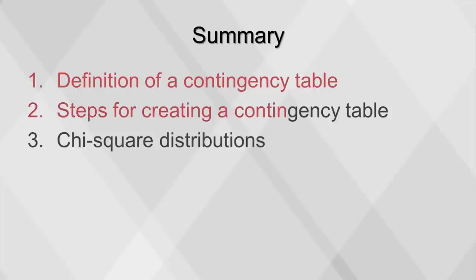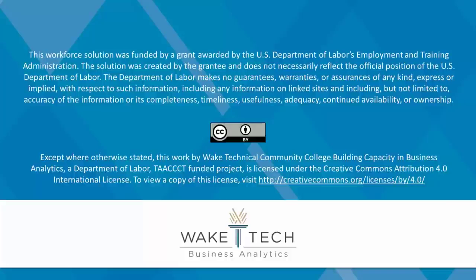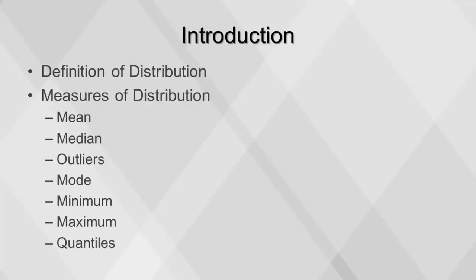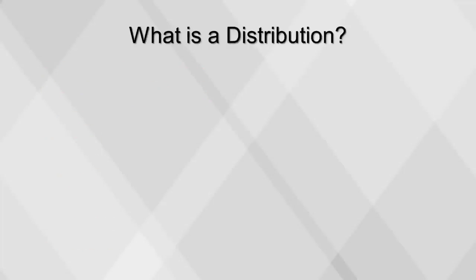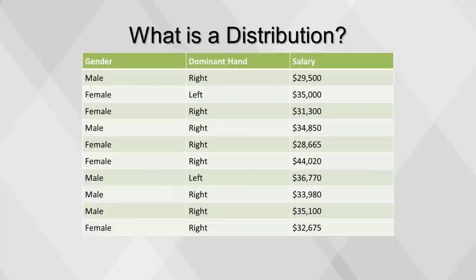Today we defined contingency tables, discussed the steps for creating one, and covered chi-square distributions. This video will first define distribution, then cover measures of distribution: the mean, median, outliers, mode, minimum and maximum values, and quantiles. The most common method of analyzing a numeric variable is by exploring how the values are distributed. The distribution of a numeric variable shows all the possible values and how often they occur, and can be summarized using numerical measures or visualizations.